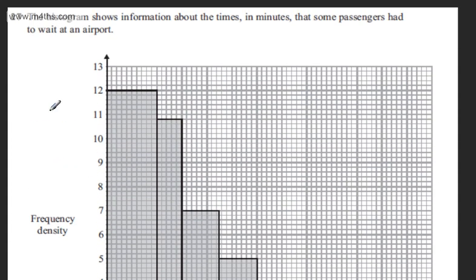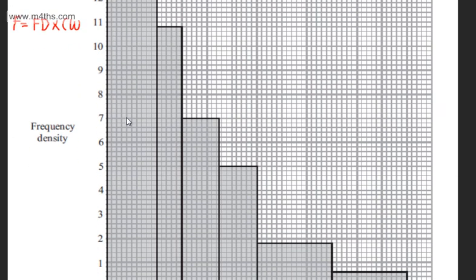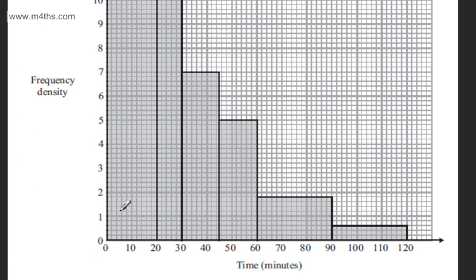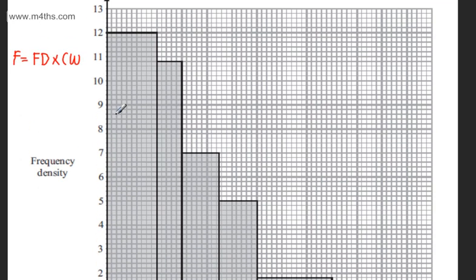I can find the frequency by multiplying frequency density by class width. So the frequency will be the frequency density multiplied by the class width. So let's go ahead and work out a value for each of these bars. We can see the class width is 20, the frequency density is 12. So I'm going to have 12 multiplied by 20, which is going to give me 240 people.